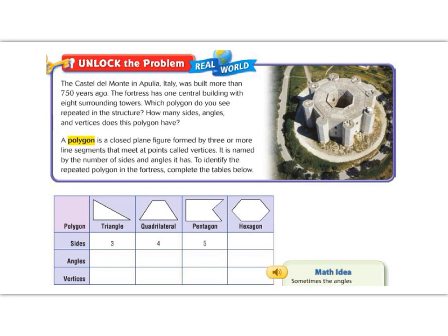Alright, 5th graders. Lesson 11.1 is our first jump into geometry. In geometry, we're going to be looking at lots of different shapes. Let's begin by reading the Unlock the Problem. It says, The Castle del Monte in Italy was built more than 750 years ago. The fortress has one central building with eight surrounding towers. Which polygon do you see repeated in the structure? How many sides, angles, and vertices does the polygon have? A polygon is a closed plane figure formed by three or more line segments that meet at points called vertices. The vertice is the corner. It is named by the number of sides and angles that it has. To identify repeated polygons in the fortress, let's complete the table below.